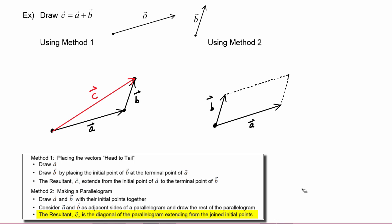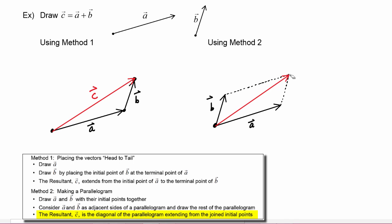In the last step, the resultant vector C is the diagonal of the parallelogram extending from the joined initial points. Every parallelogram has two diagonals, and we use the one that starts from their joined initial points — so C is that vector. We can see that both methods, head-to-tail and parallelogram, give us the same vector C as our solution.